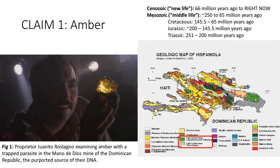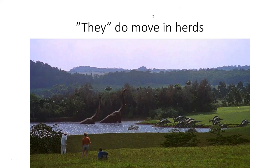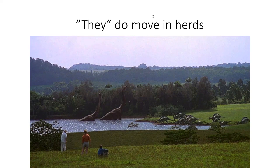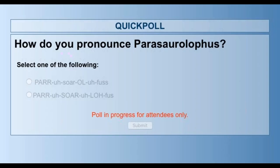Dr. Grant reported seeing a group of dinosaurs moving in herds — the name is never pronounced in the movie. A poll asks how to pronounce it: 'Parasaurolophus' or 'Parasaurolophus.' Results show 61% agree with the first pronunciation, while 39% prefer the second. Meanwhile, the large-bodied long-necked dinosaurs in the scene could not actually have stood in deep water, because their lungs would be too far below the surface to inflate properly.